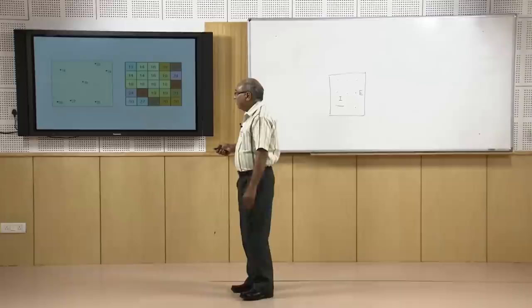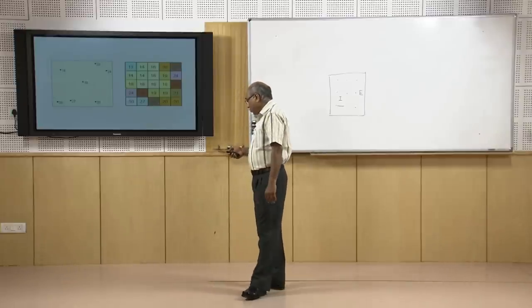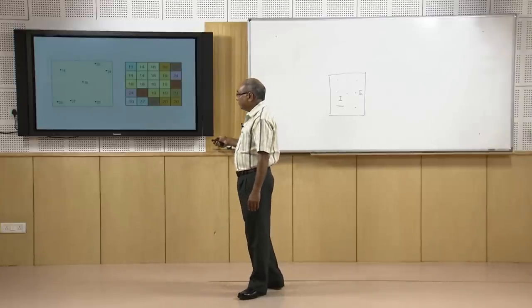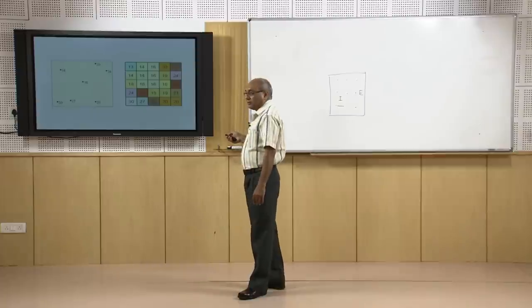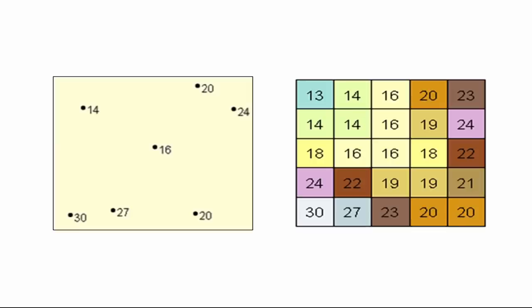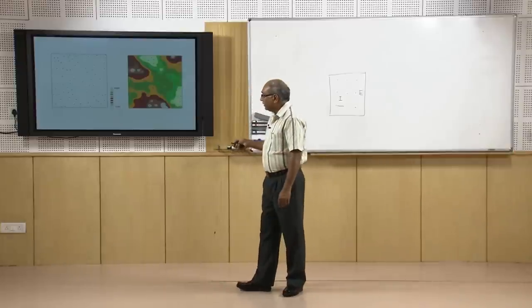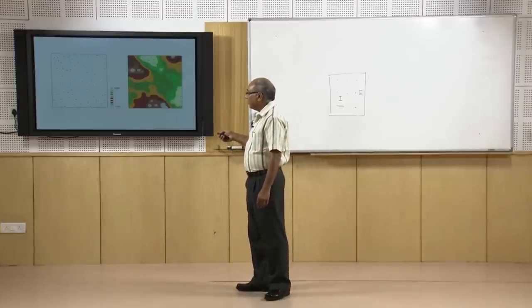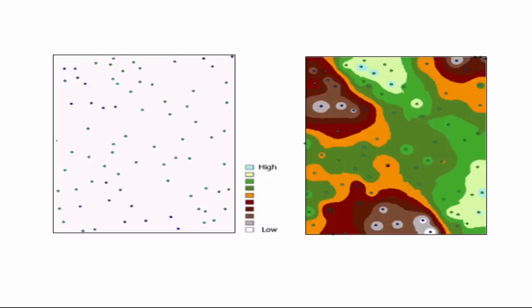This illustrates converting from discrete data to a continuous surface as a raster through interpolation. The input points all have values in their attribute table; you choose a particular field with the values for which you want to create a surface, then choose a method, and accordingly a surface will be created.